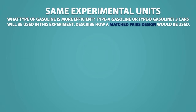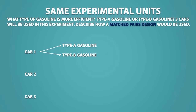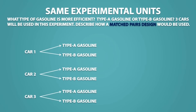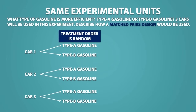Three cars will be used in this experiment. If we are using the same experimental units, then each experimental unit will receive both treatments. So we have three cars, and each car will receive both treatments — one with type A gasoline and one with type B gasoline. We would use the same car for each treatment, and which treatment goes first will be random.